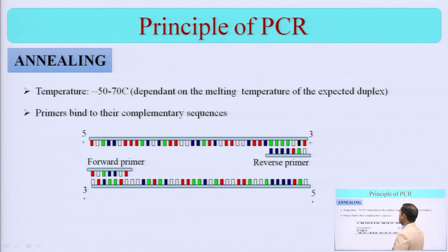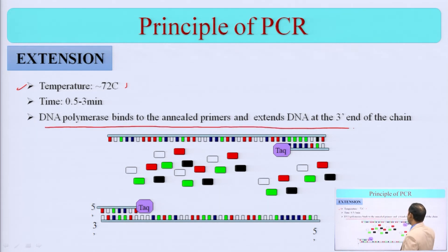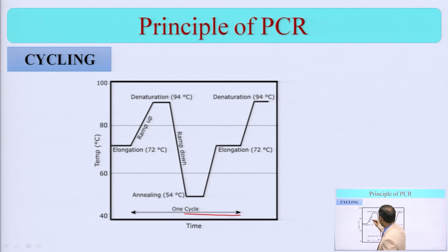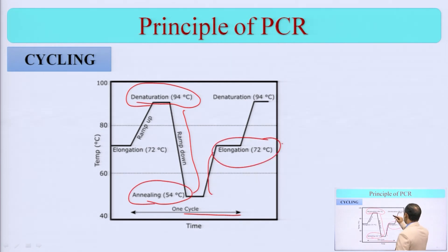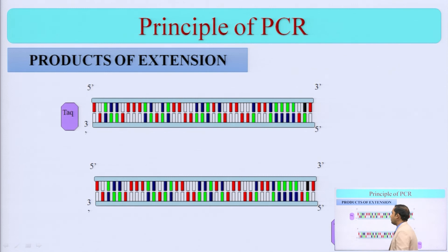So the steps are: denaturation — temperature is given to 92 to 94 degrees Celsius and the double-stranded DNA is broken into single strands. Then annealing — we reduce the temperature, and reverse primer and forward primer both join and bind to their complementary sequences. Then extension — we increase the temperature slightly, and DNA polymerase binds to the annealed primer and extends the DNA. This cycle will go on and on — you can go through multiple cycles, and ultimately product extension will happen. If you have one copy, you are getting multiple copies.